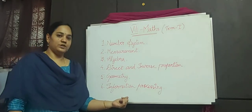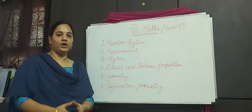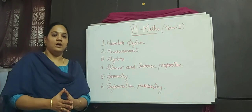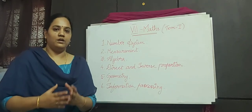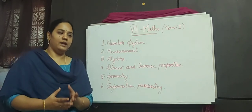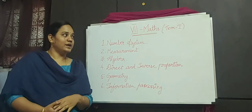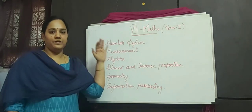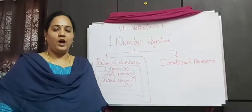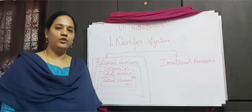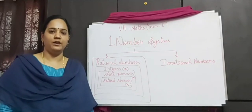Information processing — in this chapter we are going to learn a very new topic: tetromino and route map. That's all about our first term syllabus. Now let me give you an introduction about our first chapter, number system.